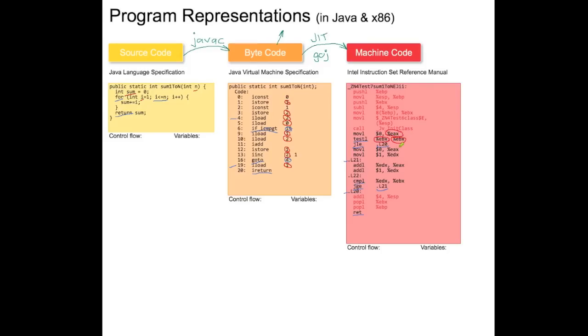So those registers have names. Here we move constant 0 into a register, constant 1 into a register. Here we add a value from a register to a register. Then we add a constant to a register, this looks like incrementing. Then we compare the value of two registers. And that's basically it for this block of code.